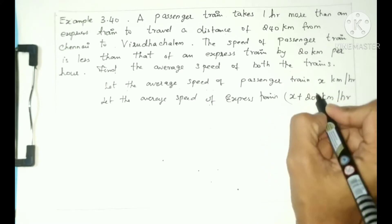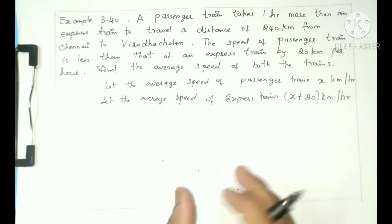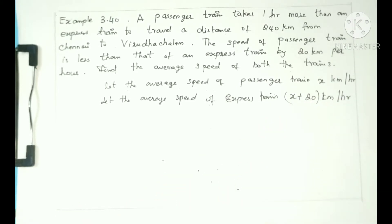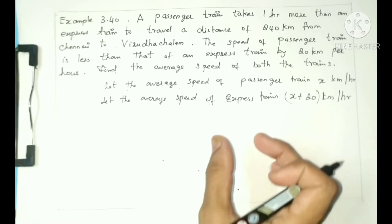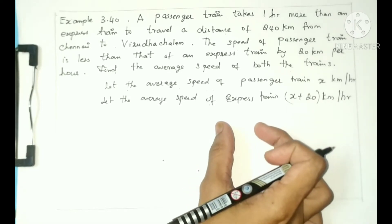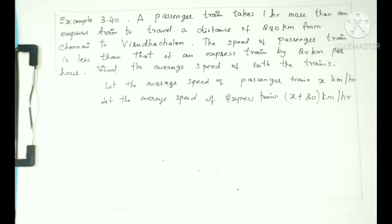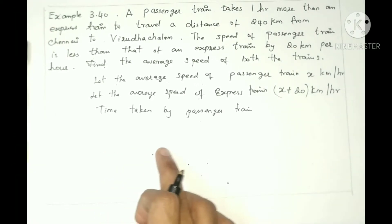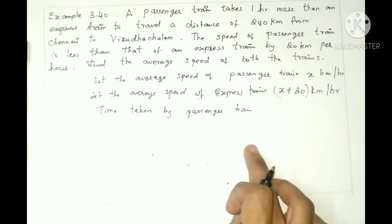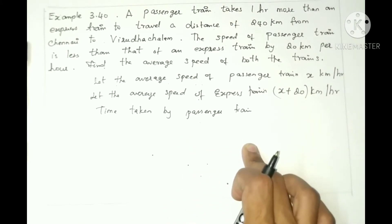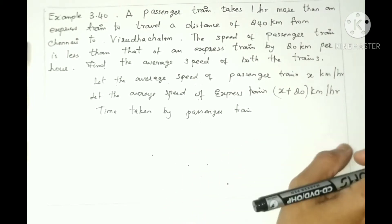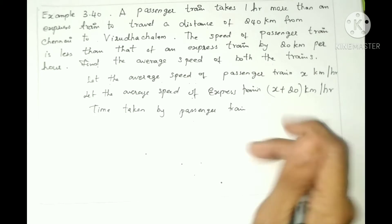Next, we need to calculate time. Time is measured as distance divided by speed — distance per hour. So the time taken by the passenger train is total distance divided by speed, which is 240 divided by x hours.